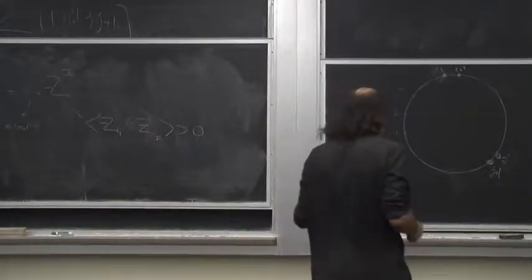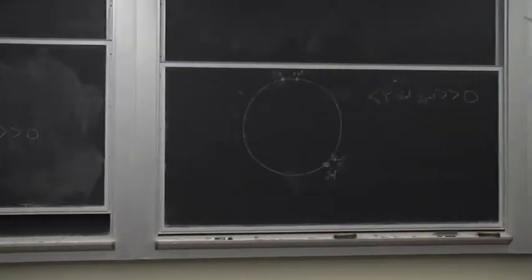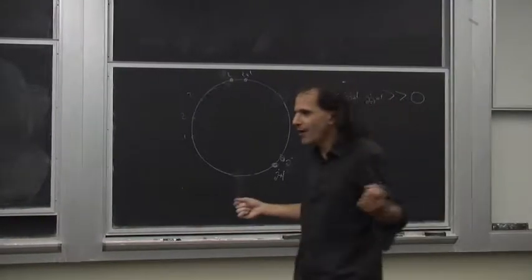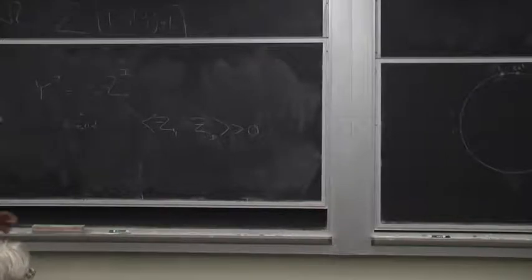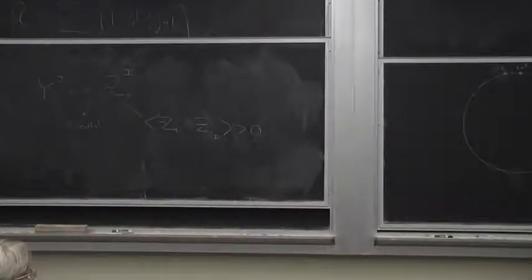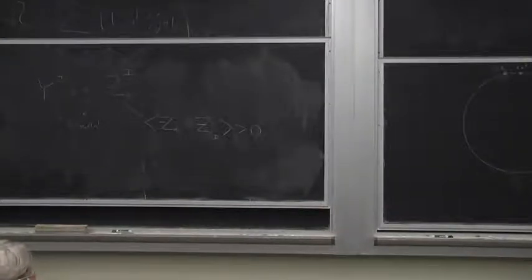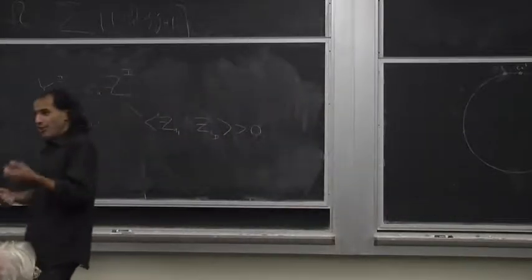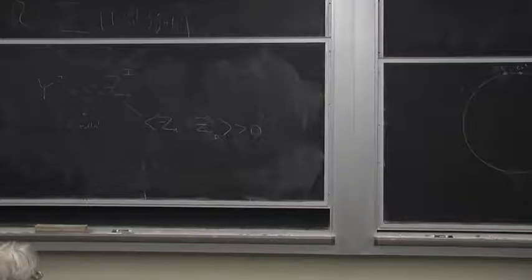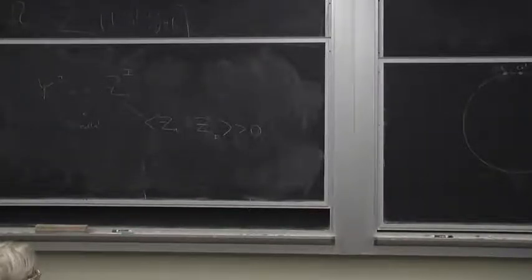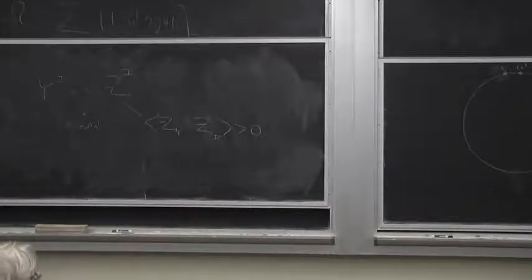If you asked those of us thinking about these things five years ago, it would be a burning question: where does this (i, i+1, j, j+1) structure come from? Because purely from the point of view of R-invariants, the Grassmannian, or any of these things — who cares? You could have anything. And the answer is this: there is this well-defined object — in this case, the K=1 amplituhedron or cyclic polytope. And just in its definition, with no desire to match anything about physics, the boundary structure gives you the key fingerprint of locality.